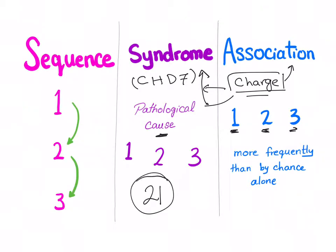Another example is Down syndrome — it's a syndrome because there is a pathological cause, which is trisomy 21. That's the difference between sequence, syndrome, and association.